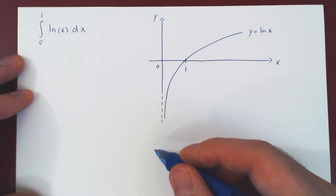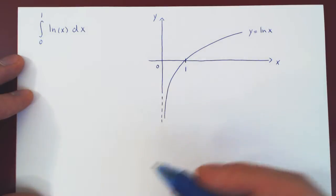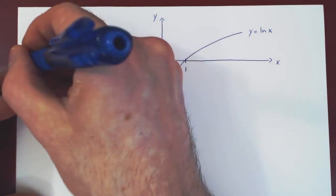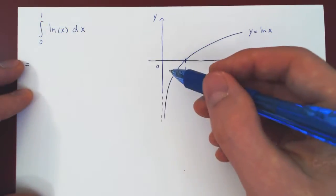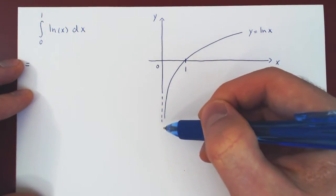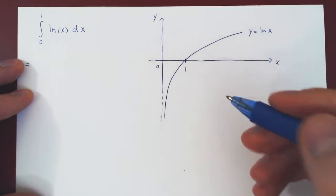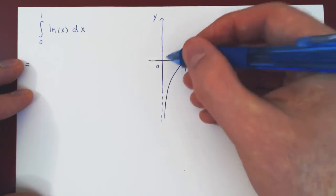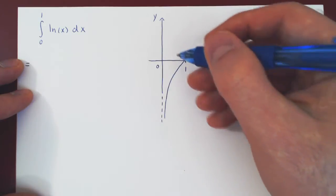As always we'll try to avoid the problem first and then with a limit obtain the initial improper integral. Well the problem here is 0 and the infinite discontinuity of ln of x at this point. So instead of starting from 0 and ending at 1 we'll start a little after 0.